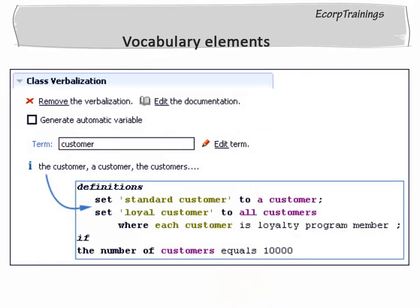Coming to vocabulary elements, a vocabulary is composed of a set of business terms, phrases, and constants. Whether a vocabulary element is a business term, a phrase, or a constant depends on the nature of its corresponding business element.